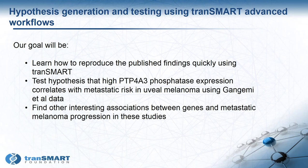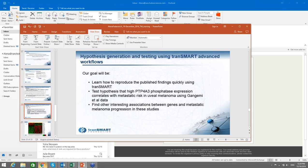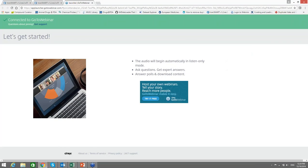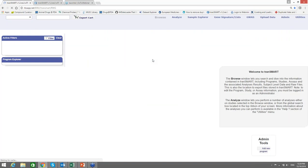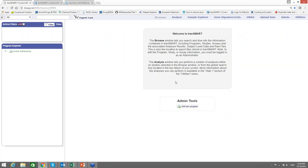Our goal will be to learn how to reproduce the published findings quickly using TransMART. We'll use the paper by Lauret, then test the hypothesis that high PTP4A3 phosphatase expression correlates with metastatic risk in uveal melanoma, using Gangemi's data set. We're going to apply the findings from one paper to a different cohort of uveal melanoma patients from a different paper, to prove that this could be true for another group of patients with the same disease. Then we'll find other interesting associations between genes and metastatic melanoma progression in these studies. So now I'm going to switch to the instance where I'll do the demonstration.